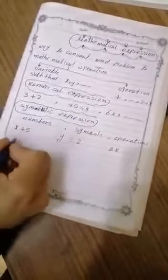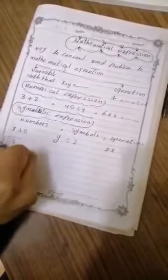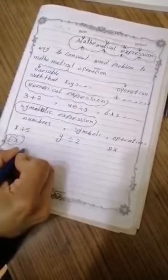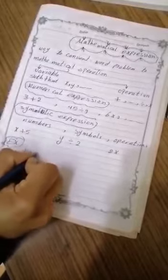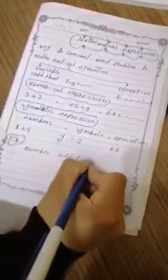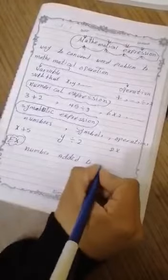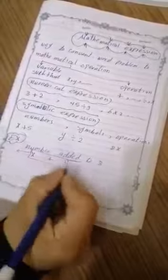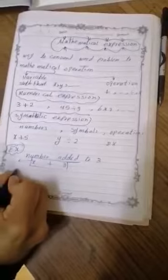For example, if we have a number added to 3. Number is a variable, x added to plus 3. This expression is x plus 3. Okay? If we have double number...